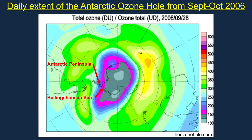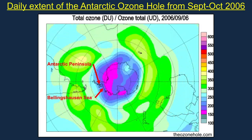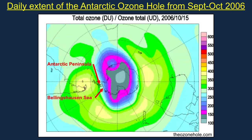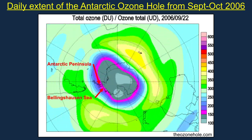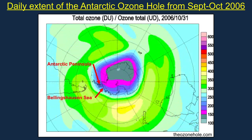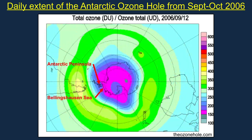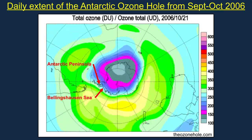Total column ozone is constantly changing at every location. This animation shows daily average ozone in most of the southern hemisphere for each day from September 1st through October 31st, 2006. Note that the Antarctic ozone hole changes daily, but typically covers most regions at latitudes greater than 55 degrees south.